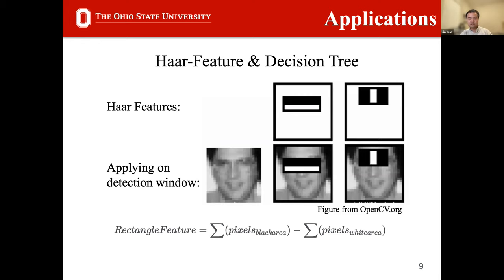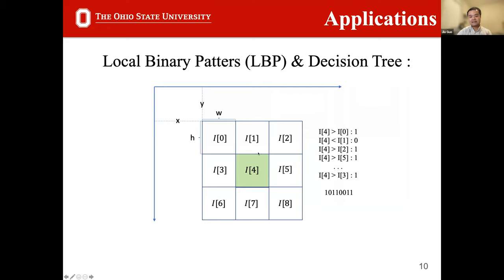The first application is target detection based on Haar features, visualized as series of black-and-white rectangles. For a given detection window, Haar features are applied to the image; by subtracting the sum of pixels in white areas from those in black areas, edge information is extracted, and a decision tree classifies the window as target or non-target. The second application uses local binary patterns (LBP): within a detection window, comparing a specific area with its surrounding eight sub-areas generates a binary string fed to a classification tree.